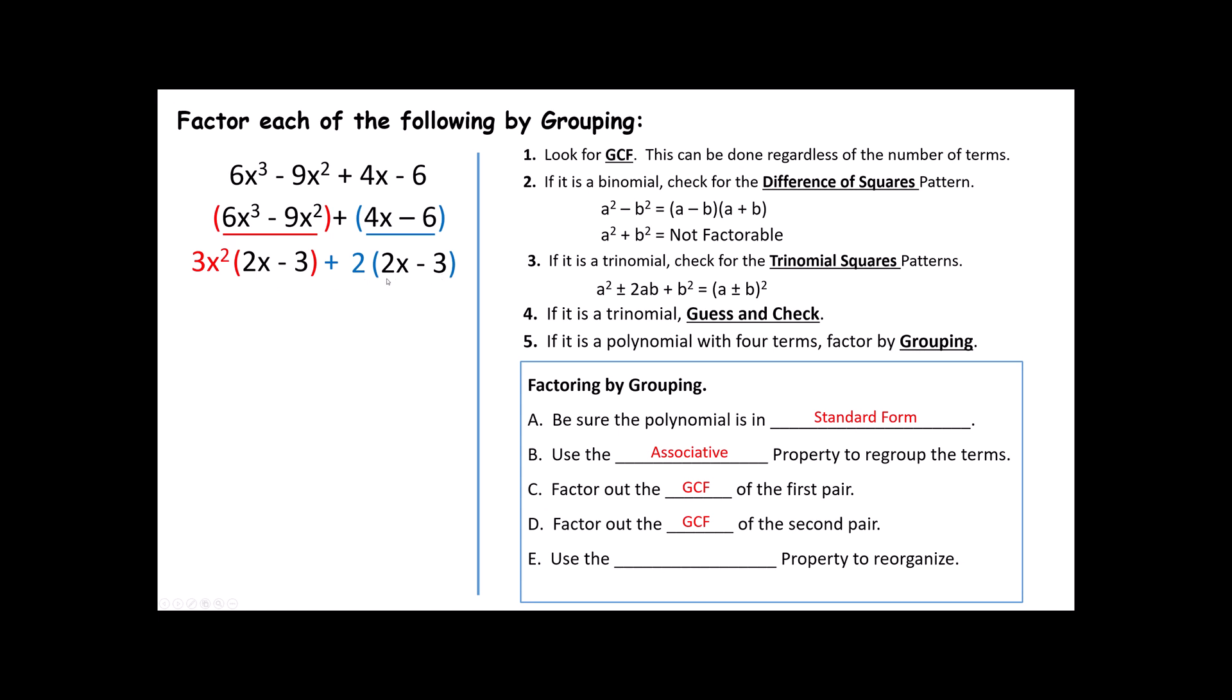Now, this next part is the cool part, but it only works if what's inside of the parentheses matches. Notice I have 3x² times (2x - 3), and I have 2 times (2x - 3). If both of these match, here's what I can do. I can use the distributive property to reorganize this equation. I can take that 3x² and that +2, and I can put those together and make the binomial (3x² + 2). I then take my (2x - 3), and I just recognize that I've used it twice. This is your final solution. (3x² + 2)(2x - 3).